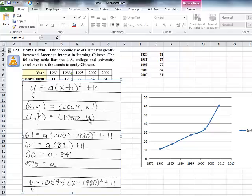So when we put the x, y, h, and k into this formula, we get 61 is equal to a times 2009 minus 1980 squared plus 11. And when you do the math and you solve for a, you have a coefficient here of a, which is 0.0595. So our final equation is y equals 0.0595 times the quantity x minus 1980 squared plus 11.